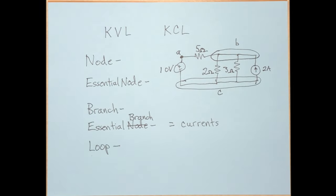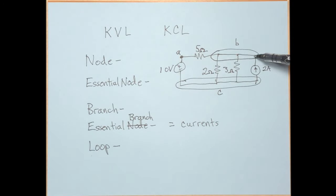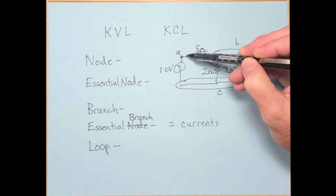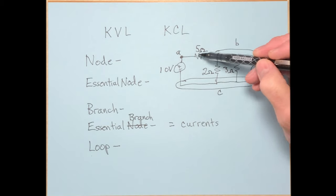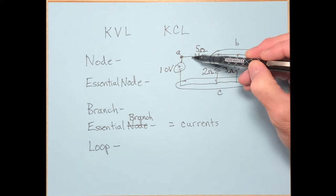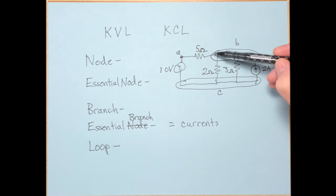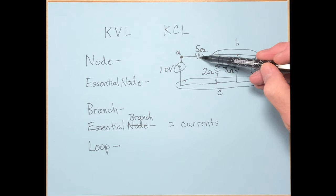A loop is a path that starts and ends at the same point and does not cross over itself. Here's what is NOT a loop: if you come down, go around, and come back to A but cross over a branch you already traversed — that crossing is not allowed. If you do that, it's not a loop.